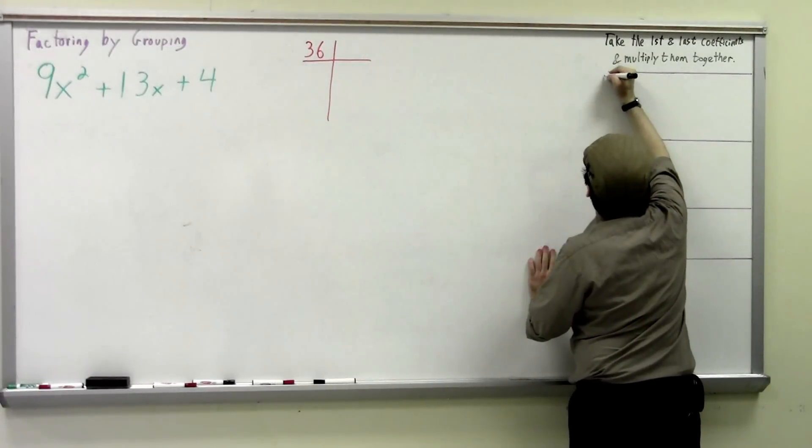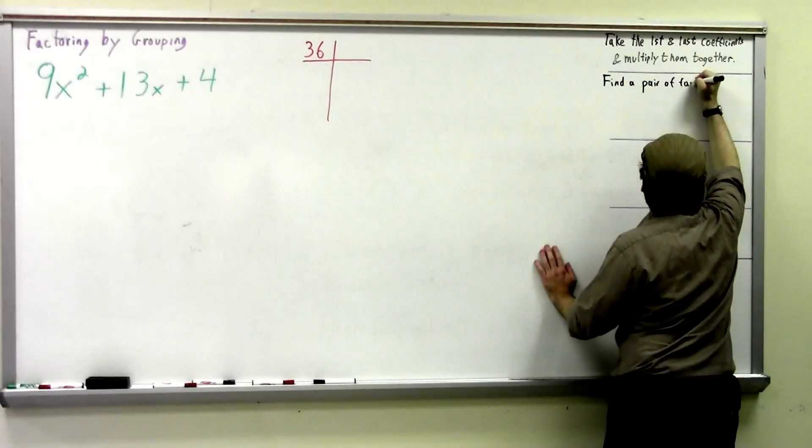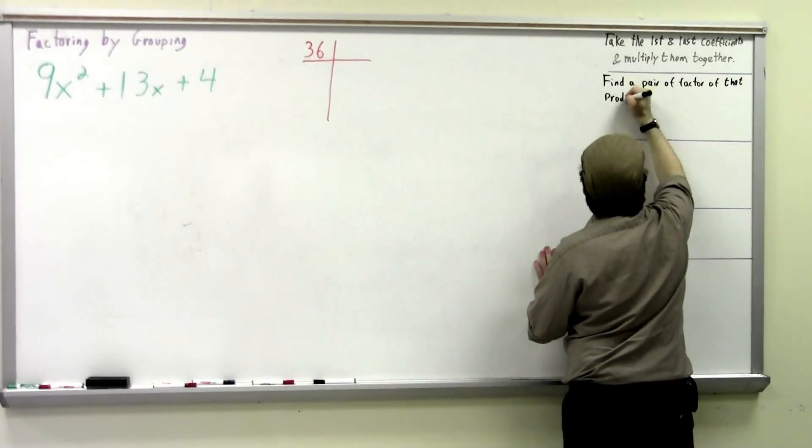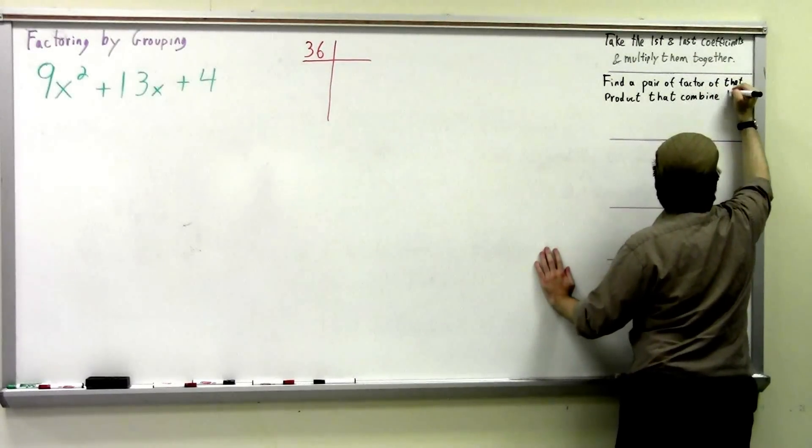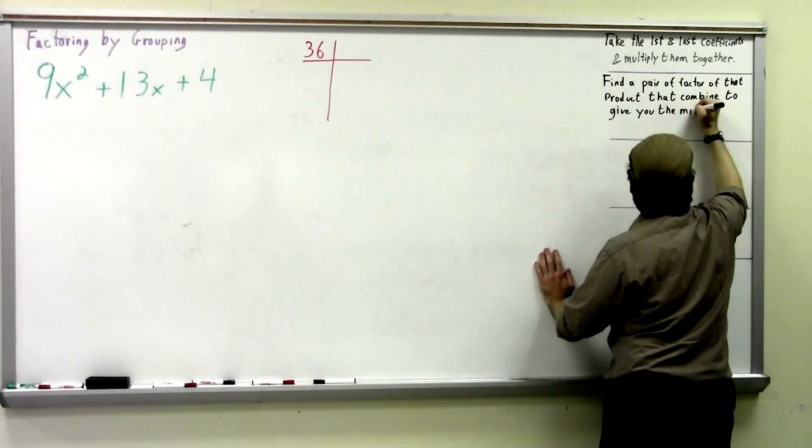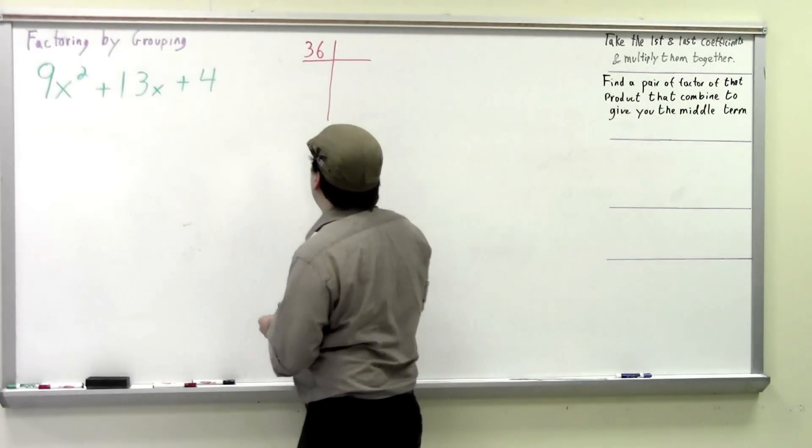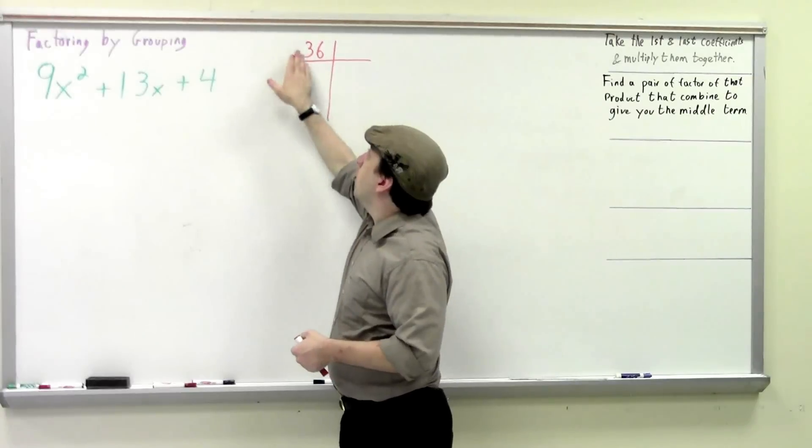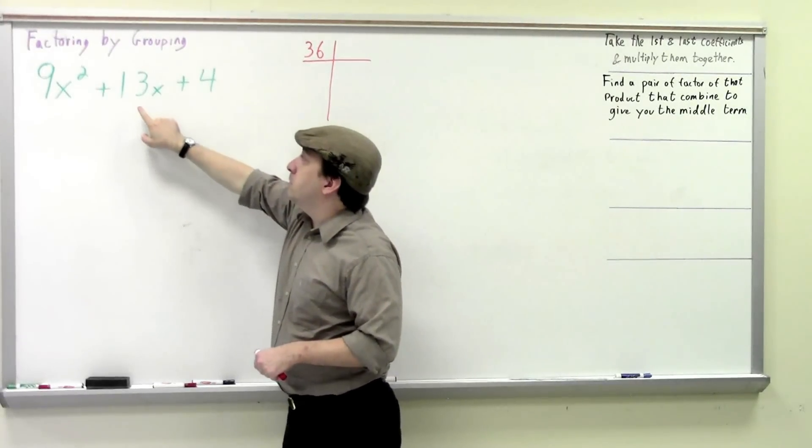The next thing you want to do is find a pair of factors of that product that combine to give you the middle term. In our case, our product was positive 36, which means that our two factors need to either both be positive or both be negative. If this had been negative, our product would have been negative 36, and one of our factors would have to be positive and one negative. What we want is the factors that we find to combine to give us 13.